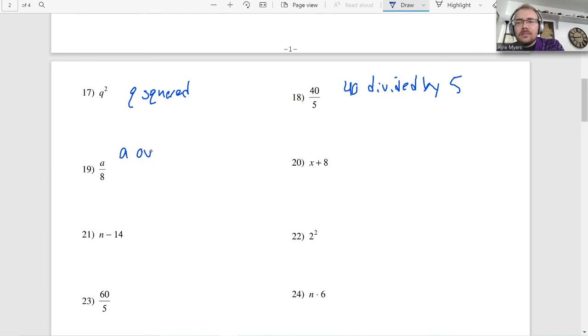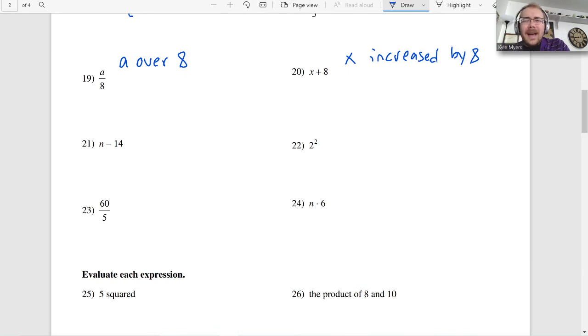This would be Q squared. Q squared. It's to the second power. So Q squared. 40 divided by 5. I think sometimes you can literally just get away with writing it out. 40 divided by 5. Or you could say 40 over 5. You could say 1 fifth of 40. You could do a lot of things there. Here, let's say A over 8. X increased by is another way to say that. You could say X plus 8. The sum of X and 8. Or here I'm going to just say X increased by 8. This time I'll do subtracted into. 6 subtracted into 14.